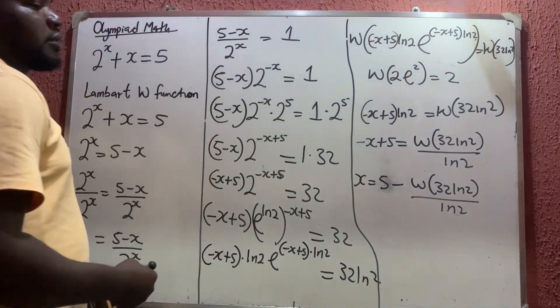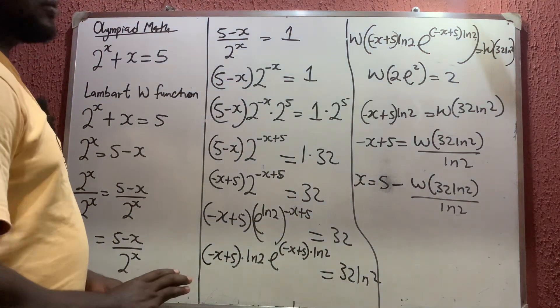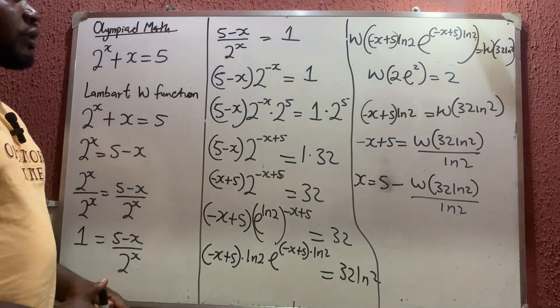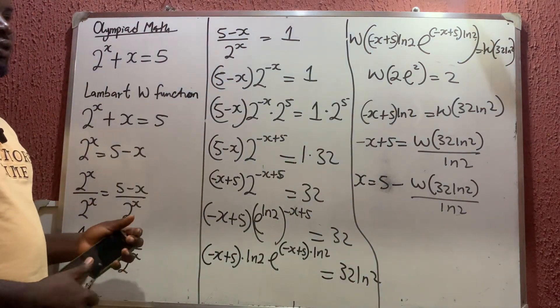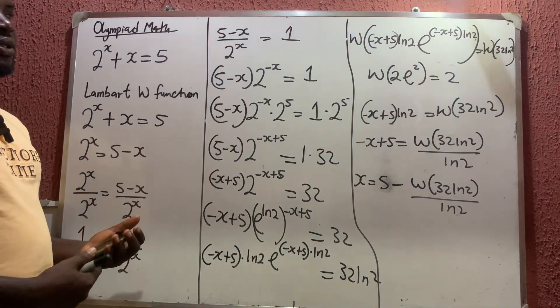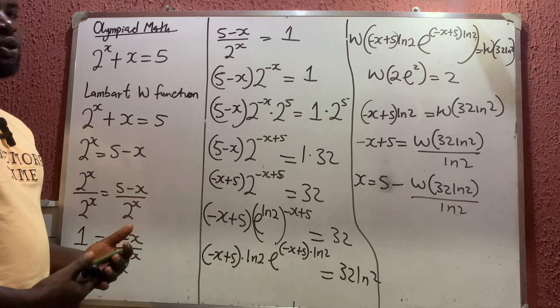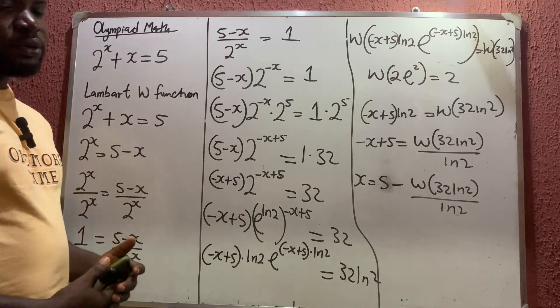So that is the answer. Thank you very much for watching — please tell us what you think. The answer is x equals 5 minus the Lambert W function of 32·ln(2), all divided by ln(2).